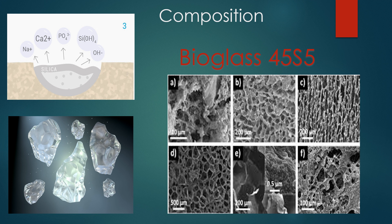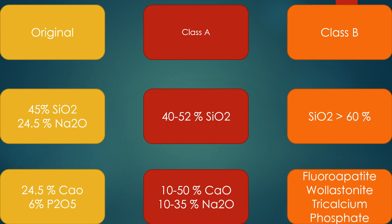This is the commercial form of bioactive glass, called BioGlass 45S5. There are three generations of bioactive glass: an original generation, class A and class B. The original generation contains 45% silicon oxide, 24.5% sodium oxide, 24.5% calcium oxide, and 6% phosphorus oxide. The other generations include these constituents.